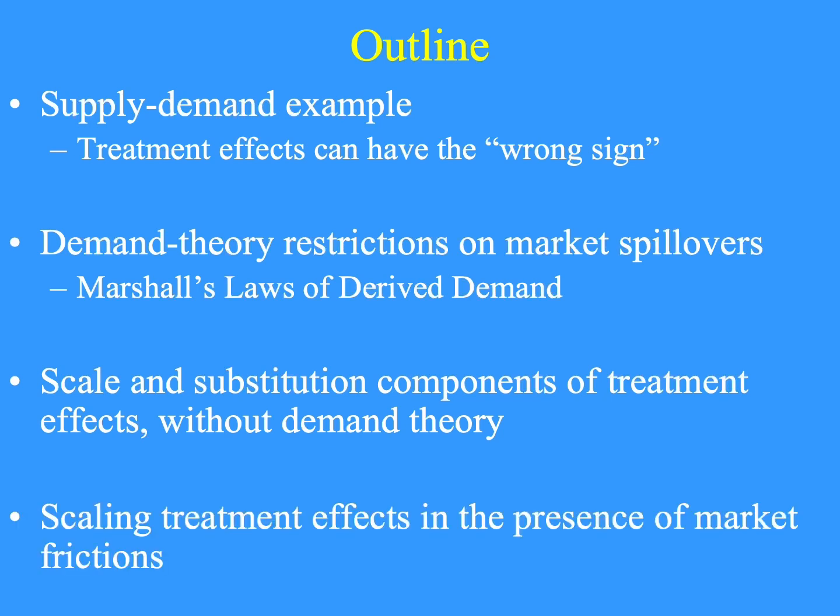The Hicks-Marshall characterization works far beyond demand theory applications. It does not need optimization or anything like that. All it needs is a weak concept of comparability between the treated and controls. From there, we can see how to take observations from a targeted treatment and scale them for a counterfactual of a broader treatment. Market frictions make that possible.